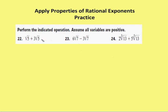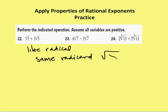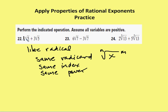Perform the indicated operation; assume all variables are positive. Remember, I can only add or subtract radicals if they're like radicals. A like radical has the same radicand — the value underneath the radical sign — the same index, and the same power. If I have the same radicand, index, and power, I have like radicals. Here, 1 times the square root of 5 plus 3 times the square root of 5 gives me 4 root 5. Then 6 root 7 minus 3 root 7 — like radicals again; the unstated index is 2 and the unstated power is 1 — gives me 3 root 7.